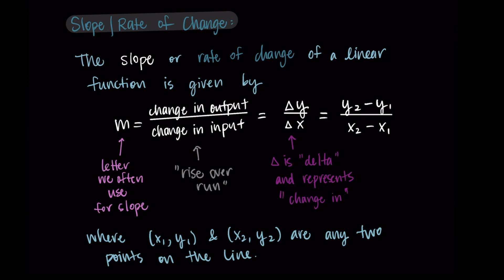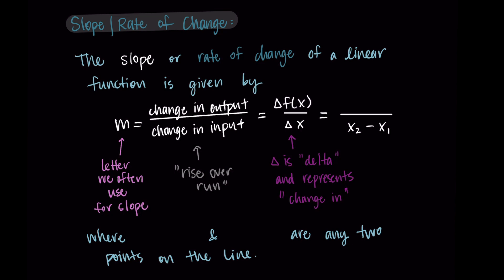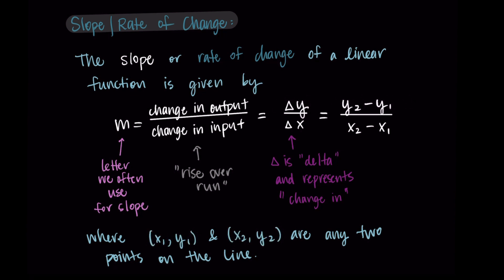I just want to mention that here I'm using y as the output, so you might also see this as f(x) instead of y. You might also see this formula written as delta f(x) over delta x, using function notation. So instead of x1, y1, we'd have x1, f(x1), and then x2, f(x2). The slope formula would then be f(x2) minus f(x1) over x2 minus x1. This is just a different way to write the same thing, but I'm going to stick to y and x because it simplifies things.